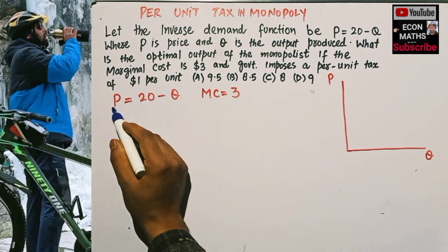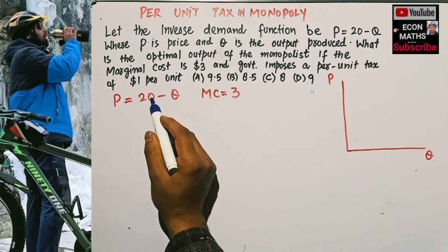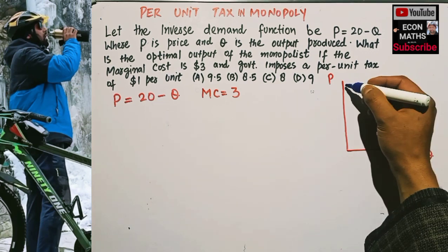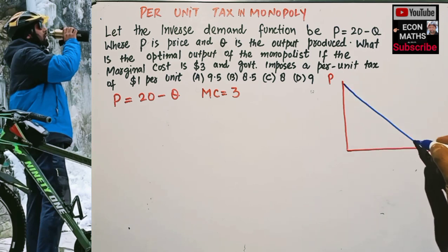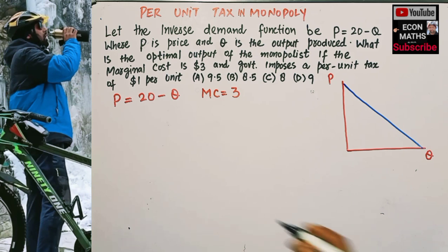Let's first draw the demand function. The price intercept is 20, so our demand function will look like this. This is our demand function.